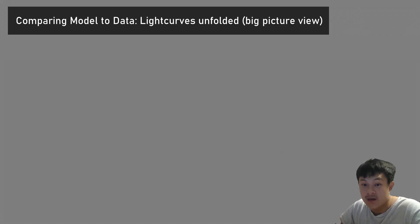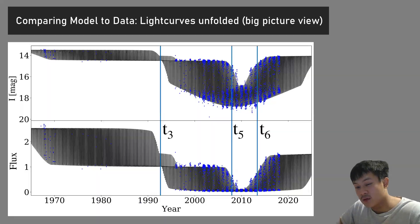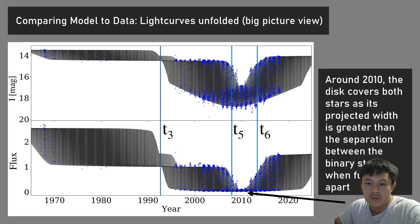Another way to look at this is as an unfolded light curve, the big picture view. You can more clearly see that the light curve dips up to five magnitudes. What I want to point out is around 2010, the width of the disk covers the binary such that the greatest distance between the two stars at all points is smaller than the disk width, so the whole system is actually super dark for a short amount of time.